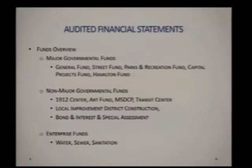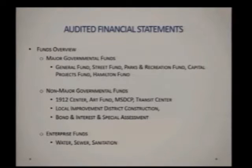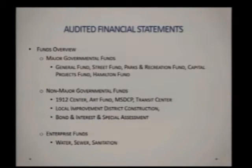One set is government-wide — it summarizes all your governmental activities and your enterprise activities. Enterprise covers water, sewer, garbage; and basically everything else falls under your governmental. A second set of financial statements breaks out governmental activities by what is major and what is non-major. Major funds is basically a calculation based on the size of how much money is in those different funds. Your major funds are the general fund, street fund, parks and rec fund, capital projects fund, and the Hamilton funds — these have risen to the level where they get to stand alone in their own column. The non-major funds are summarized within the statements, and your enterprise funds are generally separated as well.